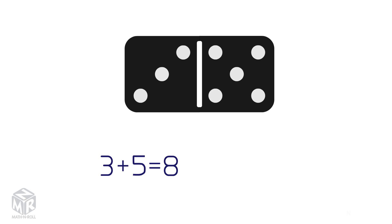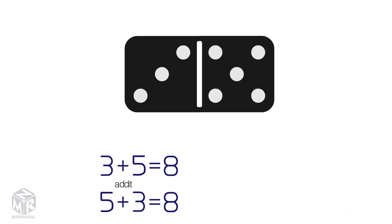Let's try another example. 3 plus 5 equals 8. 3 and 5 are the add-ins and 8 is the sum. We can change the order of the add-ins and the sum will remain the same. 5 plus 3 also equals 8. These are the addition facts.